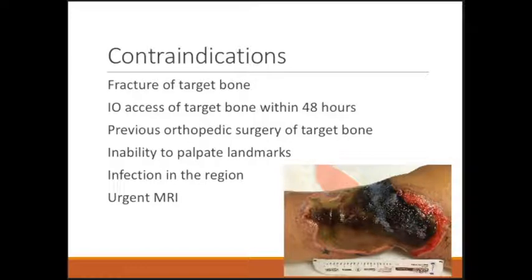Choose the contralateral site or a different bone altogether. If you can't palpate your bony landmarks, don't blindly jab around. You also don't want to place the needle through cellulitis or an abscess and introduce infection into the bone, causing osteomyelitis. It's also important to remember that IO catheters are not MRI compatible, so if you need an MRI quickly, an IO catheter may not be the best option.